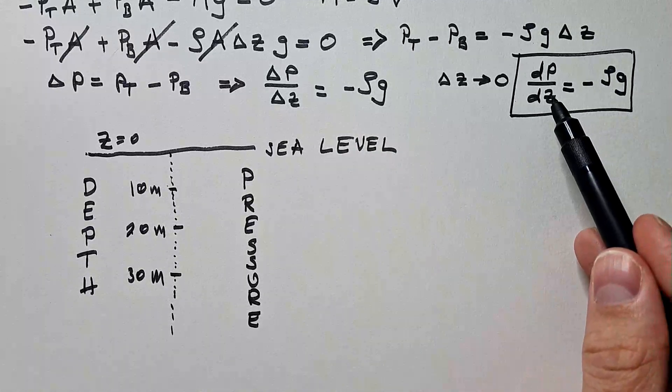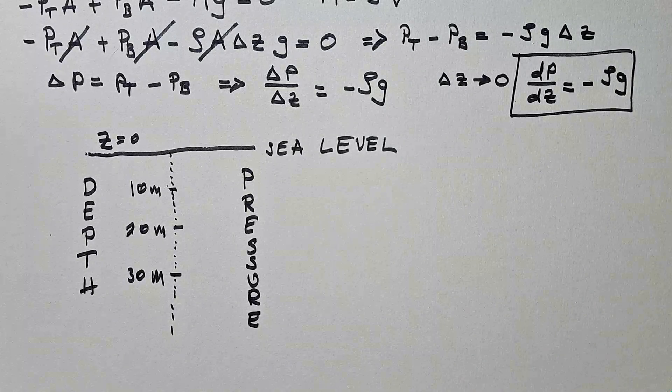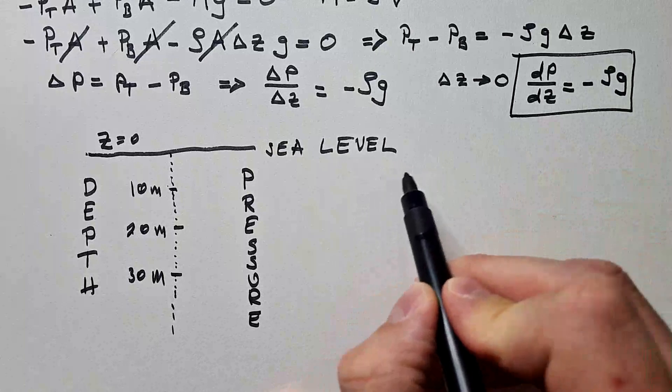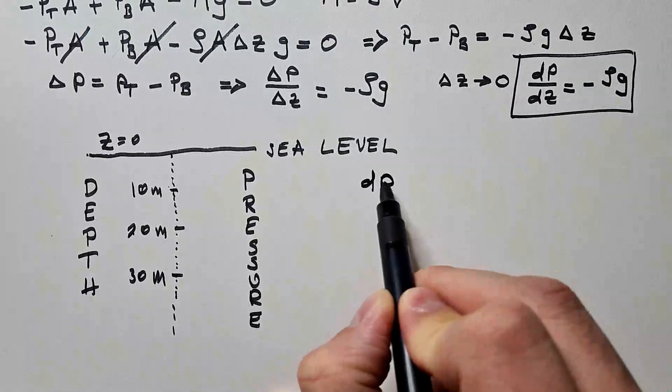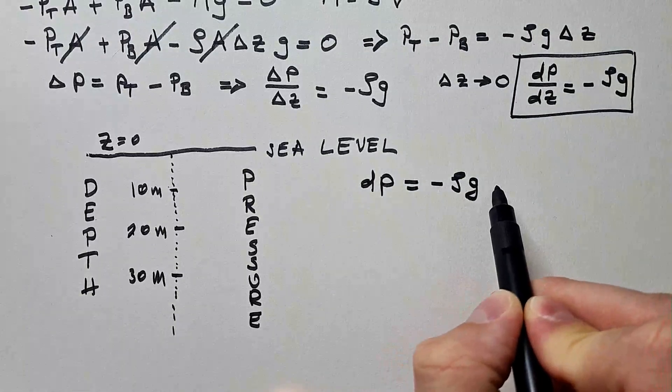I need, this is a differential equation that separates variables. So I hope you know how to solve it. If you do not, now you will learn. I separate variables. So dP is equal minus rho g dz.